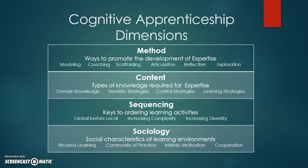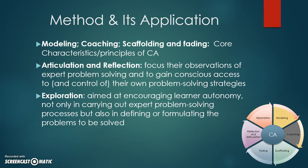The four dimensions of cognitive apprenticeship are: method, content, sequencing, and sociology. The method dimension refers to how you are going to teach a particular person to accomplish a task — what teaching method is adapted to do that. This teaching method is considered the core characteristic of cognitive apprenticeship, and everything about cognitive apprenticeship is discussed under it.